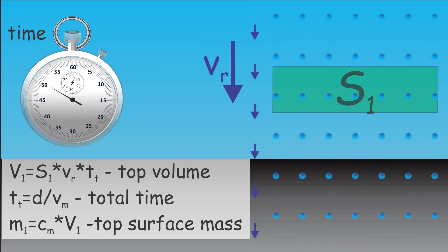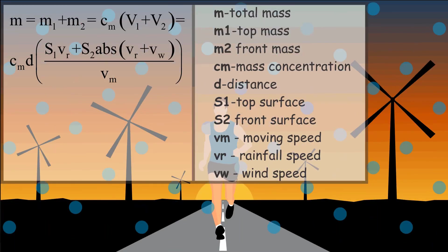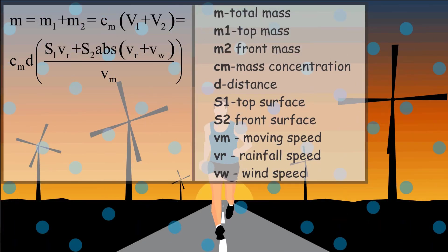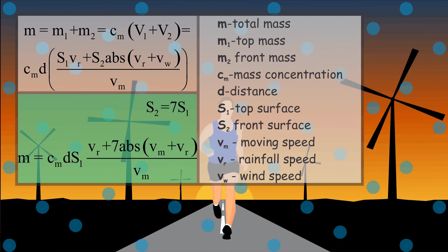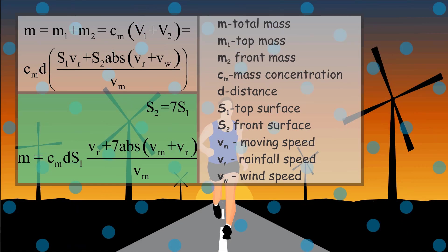All this results in the following equation for the total mass of rain. For an average human the top surface is typically 7 times larger than the top surface, so we can simplify the equation.